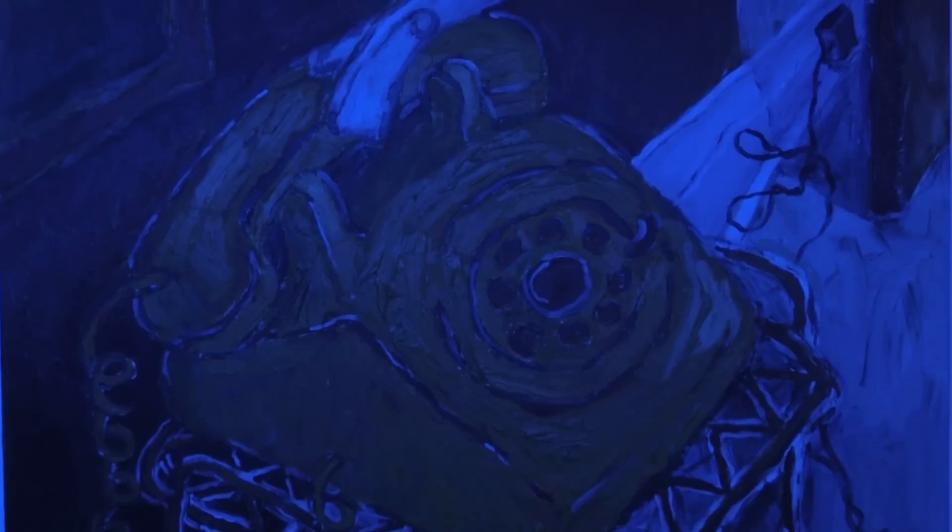Now if I turn down the red and I bring up the blue, the blue jumps out, but all the red areas suddenly become muted and almost grayish. Now I can turn that down and bring in just the green.